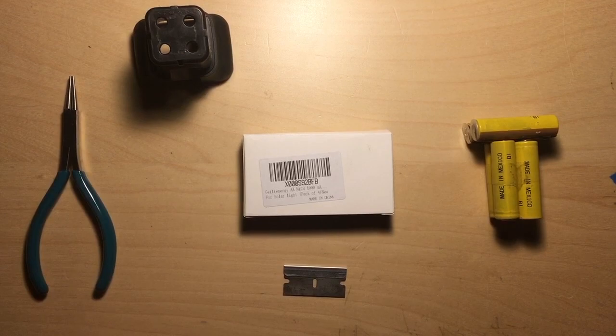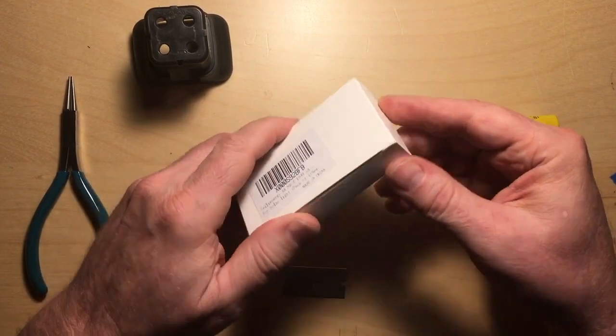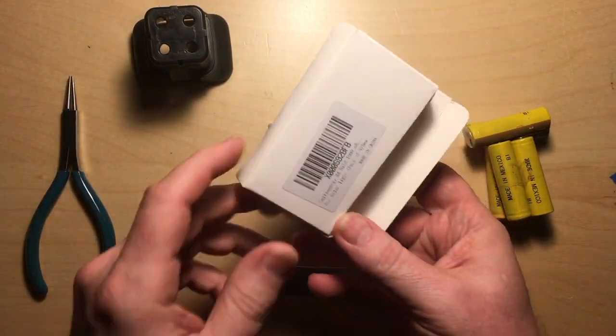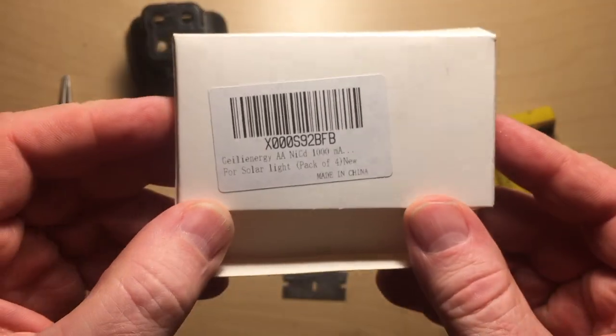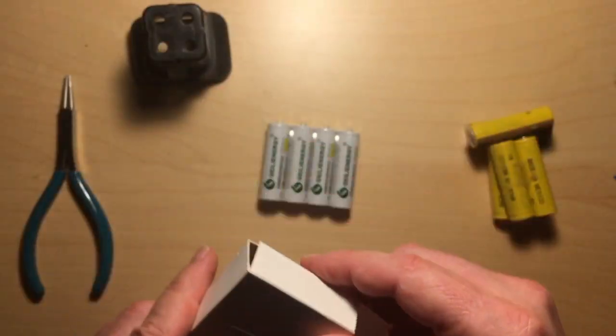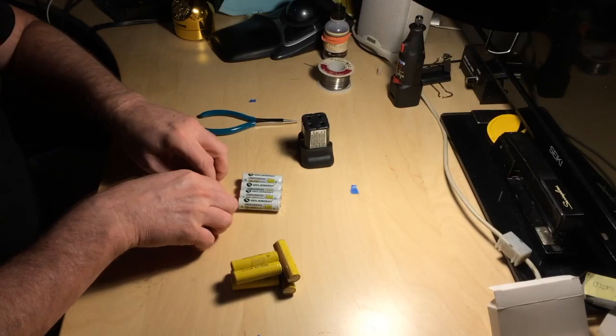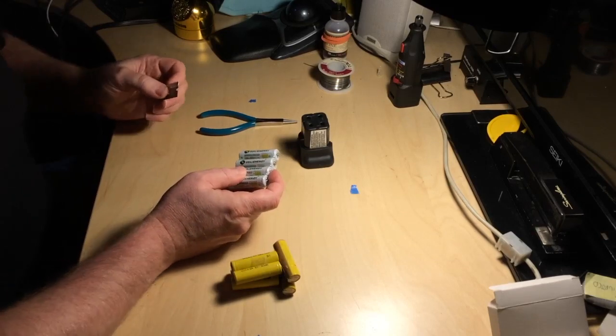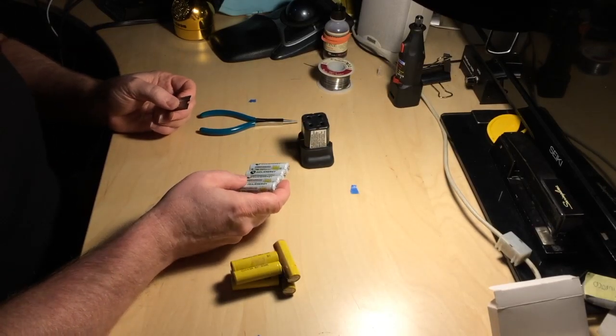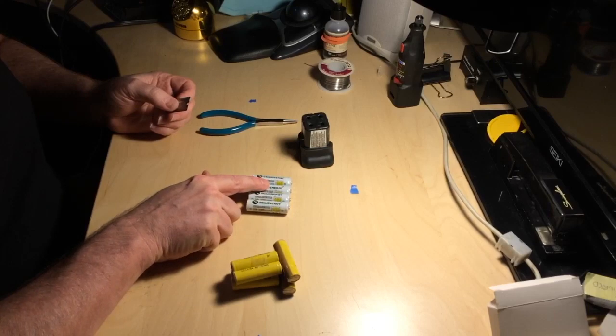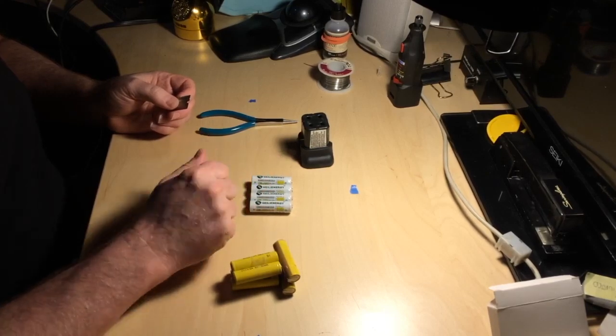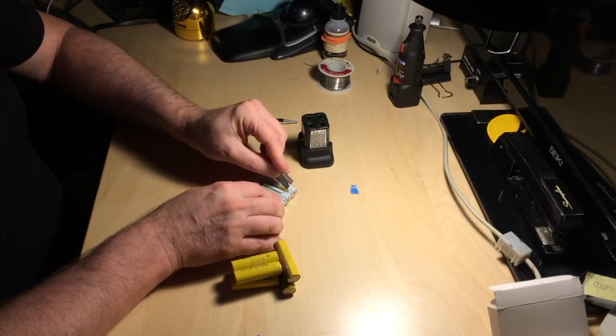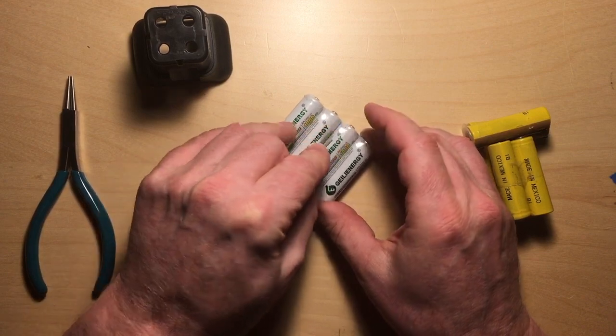So it's a few days later and the batteries have come from Amazon and this is what you get - in this little box. These only come in packs of four and of course you need six, not eight, but I have two leftover from a previous project. So I just bought this. I'll use three of these and then this one and the other two. So I'm going to try to build one of these battery packs on camera here. And then I'll build the other one offline.